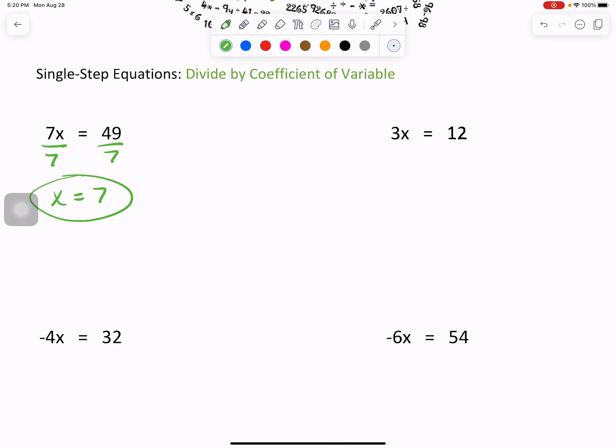Right now would be a good time to pause the video. Maybe jot down 3x equals 12 and negative 4x equals 32, and negative 6x equals 54. Because right now I will cover negative 4x equals 32, and at the end of the video, you can check your work.